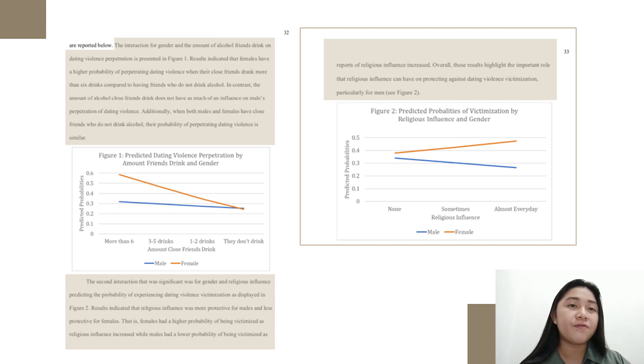In contrast, the amount of alcohol close friends drink does not have as much of an influence on males' perpetration of dating violence. Additionally, when both males and females have close friends who do not drink alcohol, their probability of perpetrating dating violence is similar.